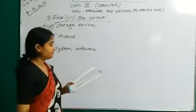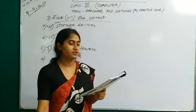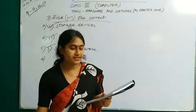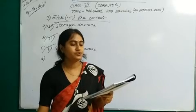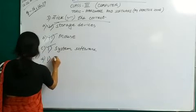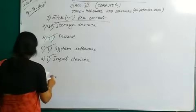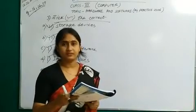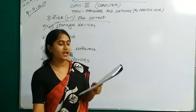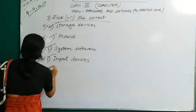Number D: Devices that are used to give instructions to a computer are called — input devices, output devices, processor, or none of these. Used to give instructions to a computer are called input devices. Option 1 is the correct answer — input devices. Number E: Processed data is called — input, memory, instructions, or information. Processed data is called information. Option 4 is the right answer — information.